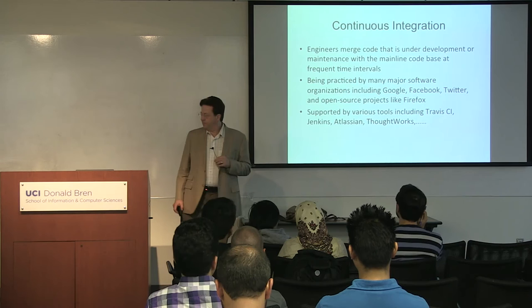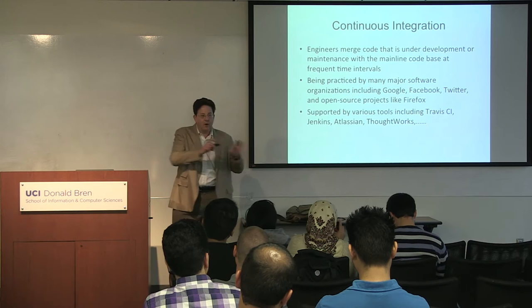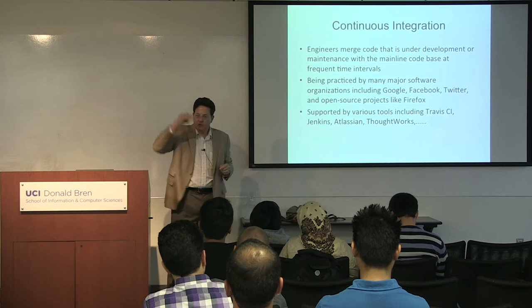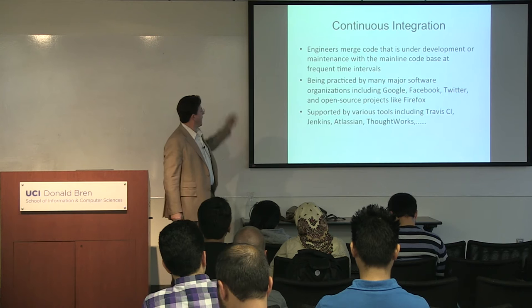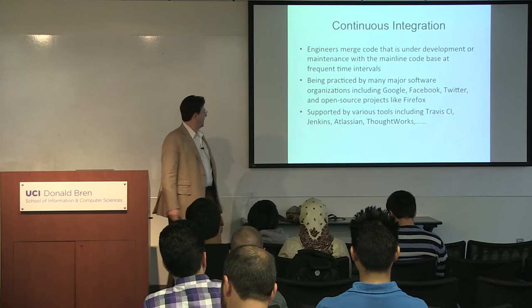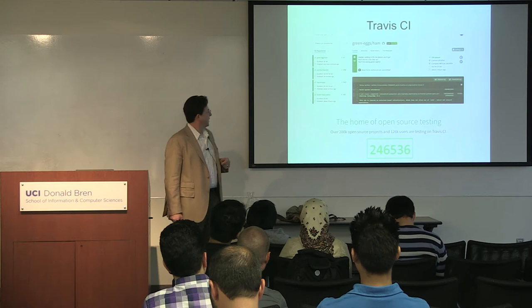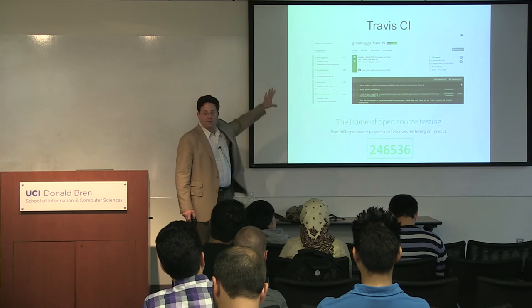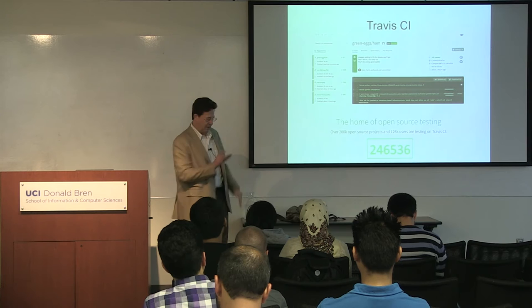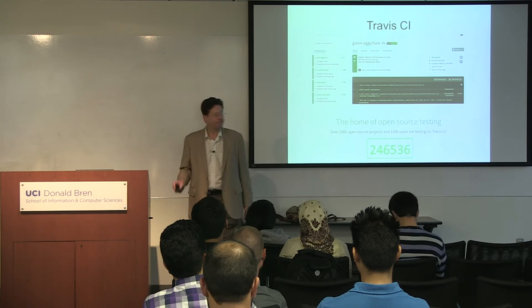In continuous integration, engineers merge code under development with the mainline codebase at frequent time intervals — instead of holding onto it on a release branch and merging later, you keep merging frequently to the head. Many major organizations use this approach: Google, Facebook, Twitter, open source projects like Firefox. Tools supporting it include Travis CI and Jenkins. Travis CI works with GitHub — any time you commit, tests will run. As of when I took the screenshot, they had more than 246,000 projects using this approach.